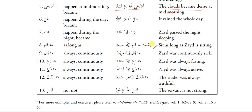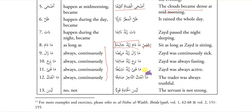Ma dama: as long. Ma dama za'idun jalisan — as long as Zayd is sitting. Ma bariha: always, continuously. Ma bariha za'idun sa'iman — Zayd was always fasting. Ma fatiha: always, continuously. Ma fatiha za'idun nasheetan — Zayd was always active. Ma anfakka — pronounced like manfakka. Manfakka tajiru sadikan — the trader was always truthful. Laisa means 'not.' Laisal khadimu kaviyan — the servant is not strong.